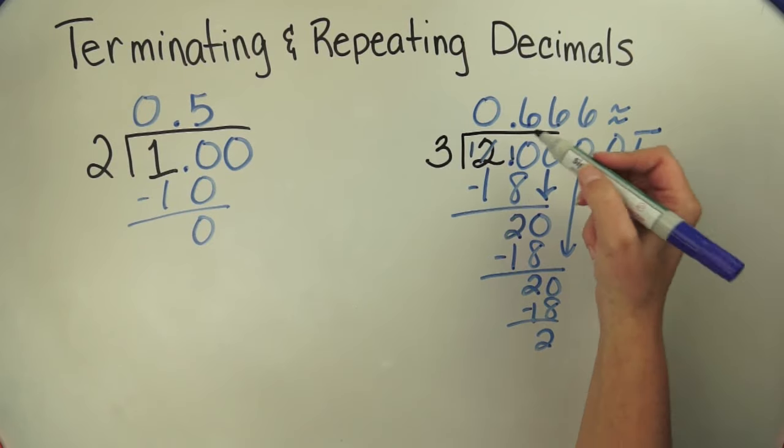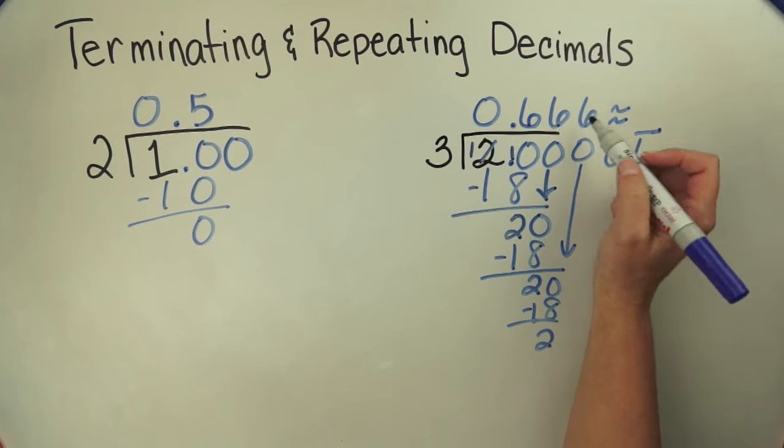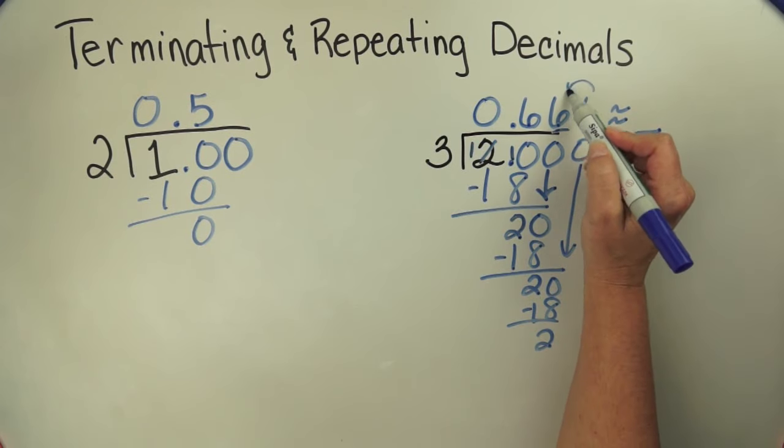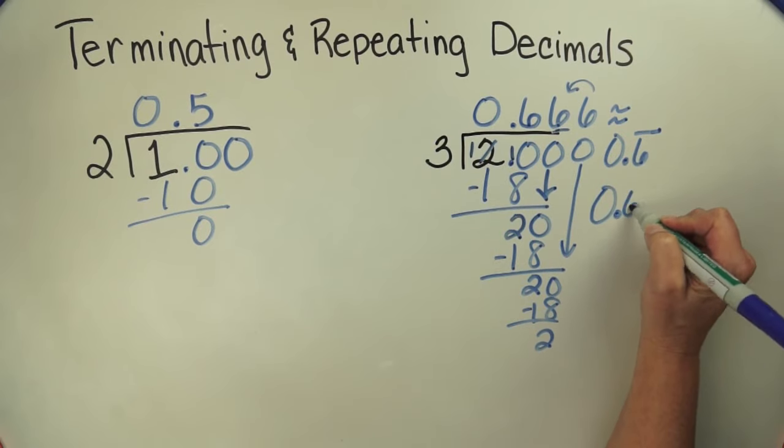Or I can round it to the nearest hundredths. And let's see. This is the hundredths place. That 6 tells that to go up 1. And I can make that 0 and 67 hundredths. Either way.